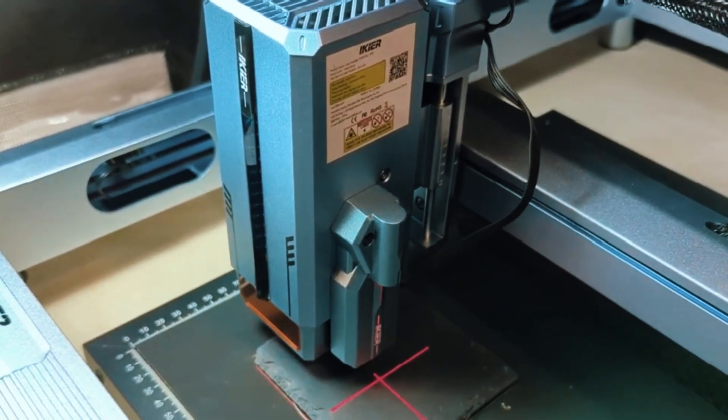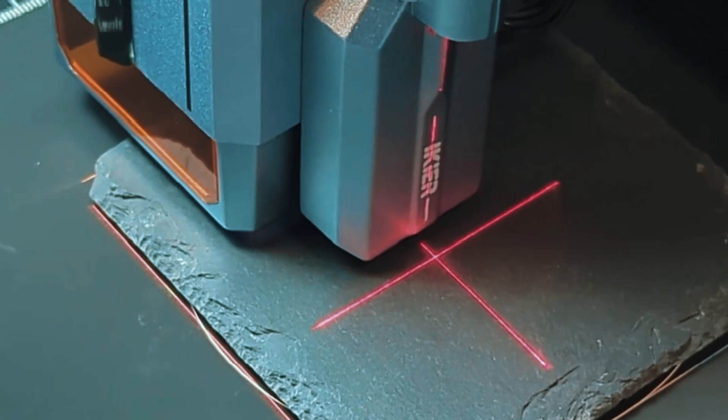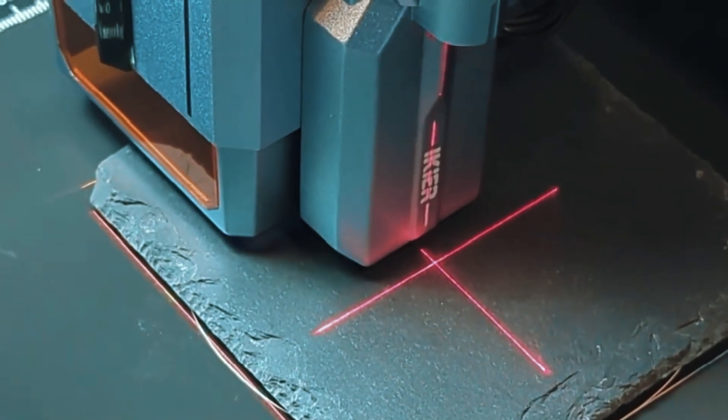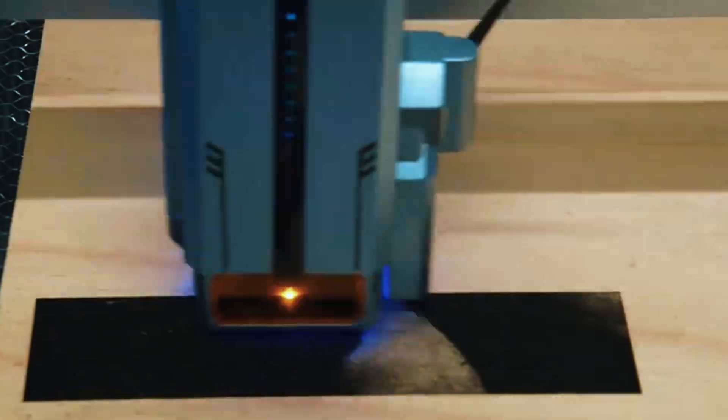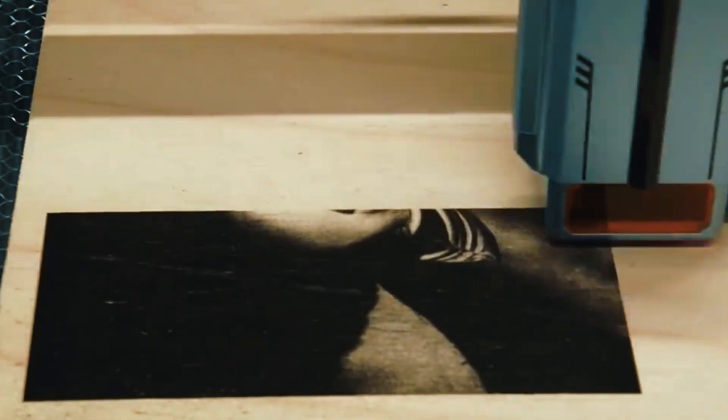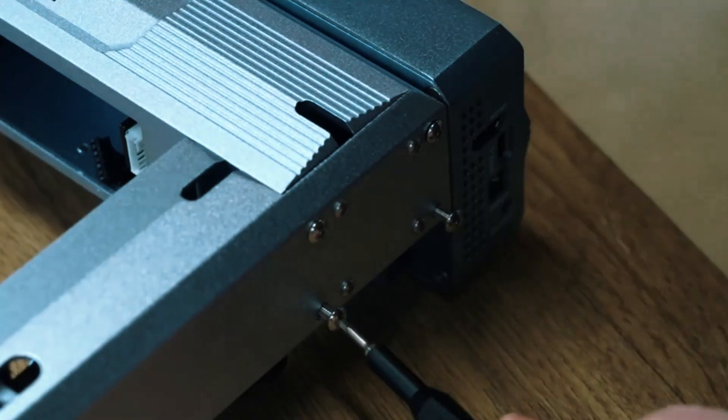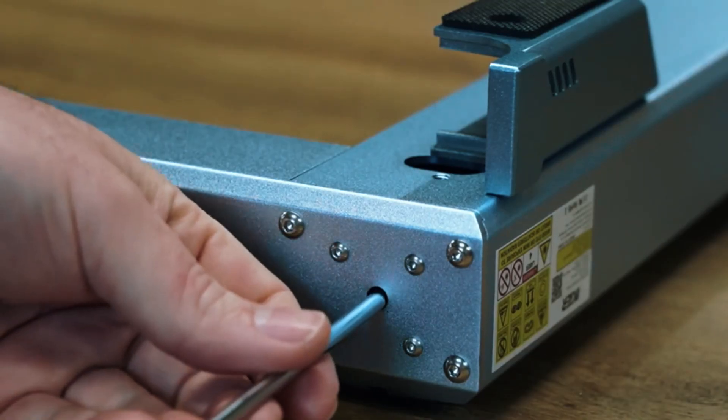The working area provides plenty of space for medium to large projects, making it suitable for signature decorative items or production batches. A rigid metal frame helps keep motion stable during long runs, and the smooth rail system maintains consistent engraving lines even when dealing with faster movements.